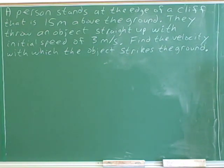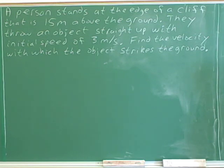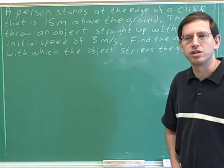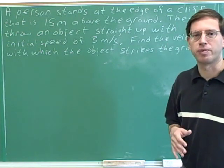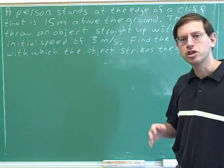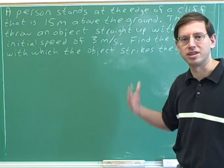A person stands at the edge of a cliff that is 15 meters above the ground. They throw an object straight up with an initial speed of 3 meters per second. Find the velocity with which the object strikes the ground. Please copy that problem into your notes and then try the problem. Please pause the video and don't proceed until you've already given the problem a shot on your own, trying to use the same notation and techniques that we've been developing in these videos.